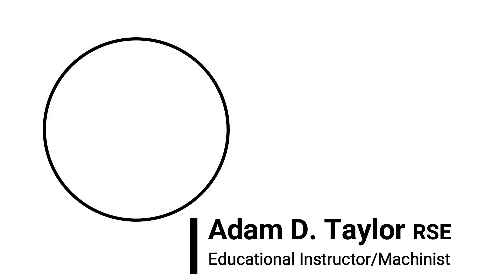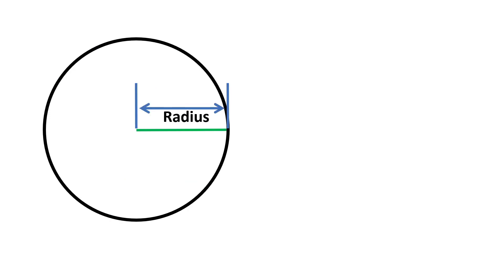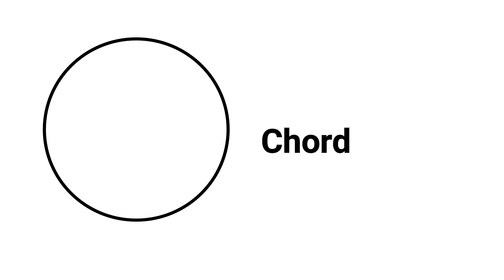A circle is a closed curve on which every point is equally distant from a fixed point called the center. The distance from the center of the circle to any point on the outside of the circle is called the radius. A chord is a straight line segment that joins two points on the circle.